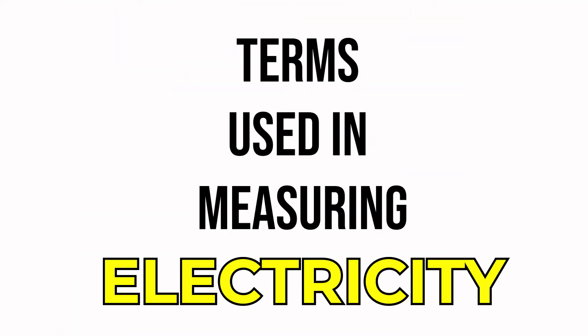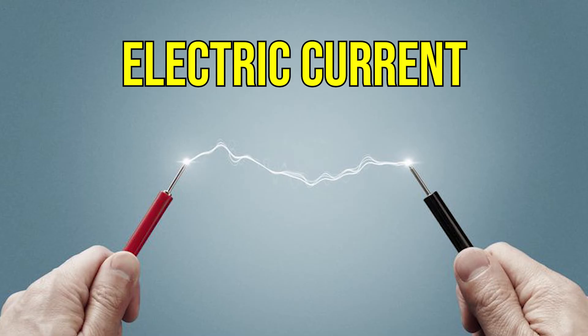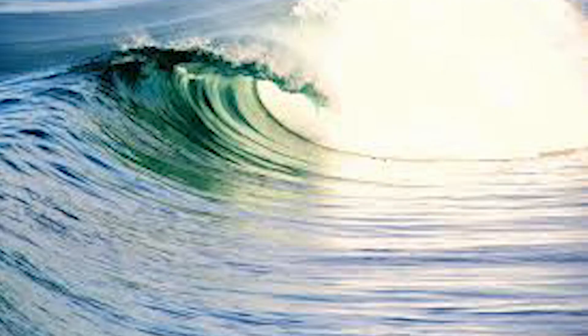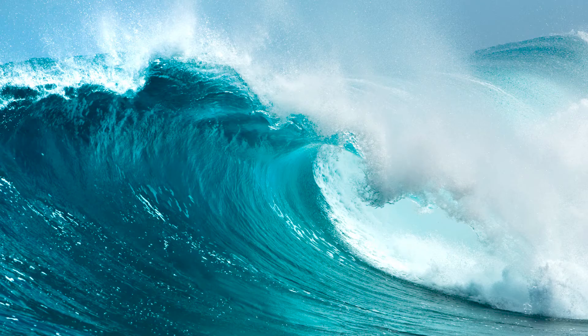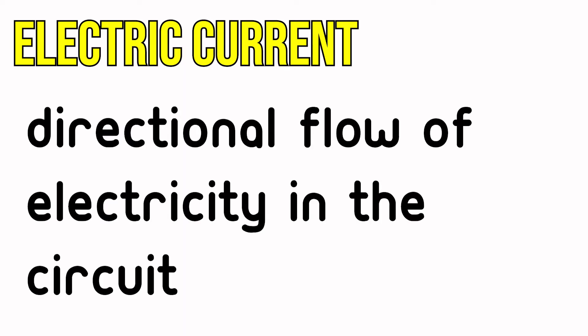So first, we'll talk about the terms used in measuring electricity, which we'll start with current. The term used for electric current — not water current you see on the oceans or rivers. But just like water, electric current is used to describe the directional flow of electricity in the circuit. We'll be constantly using this term moving forward.